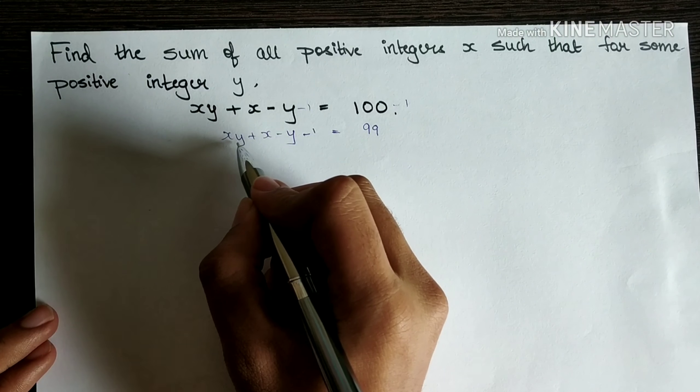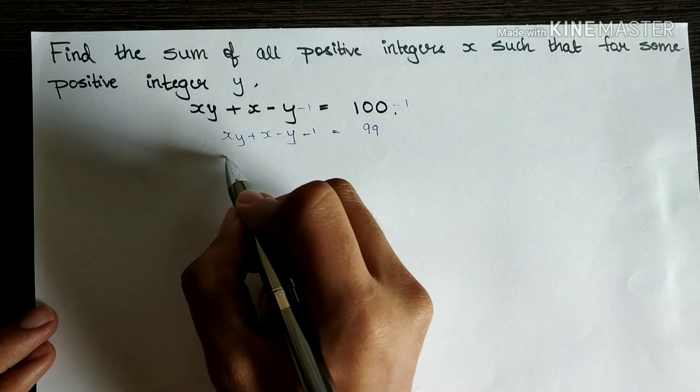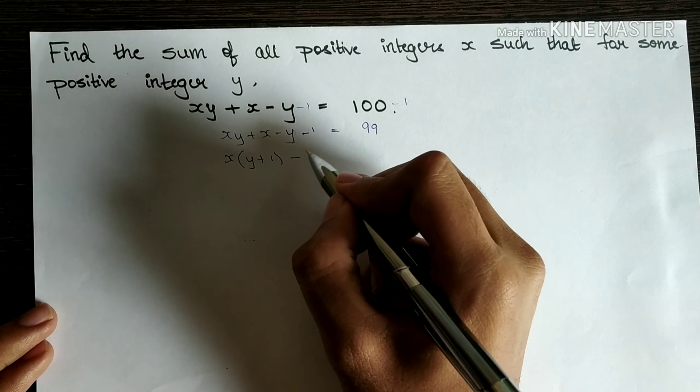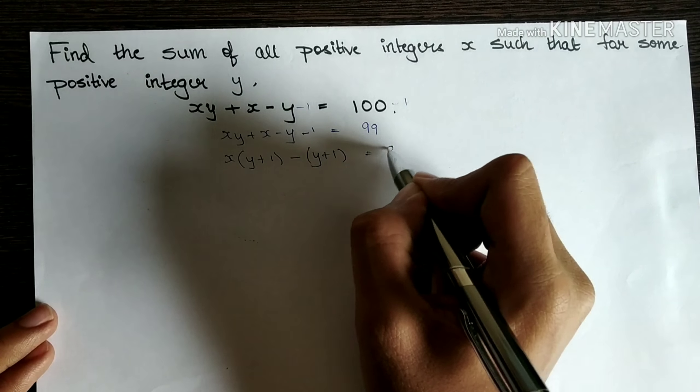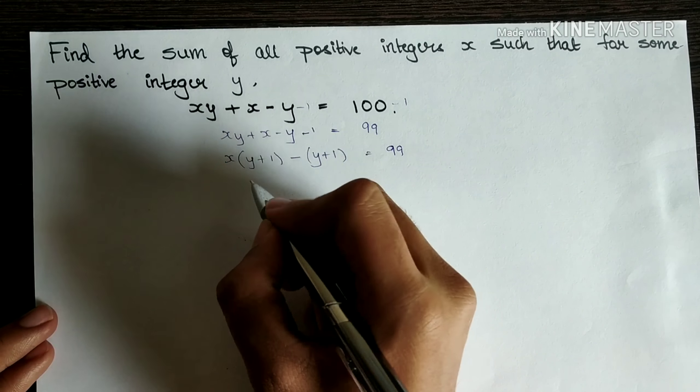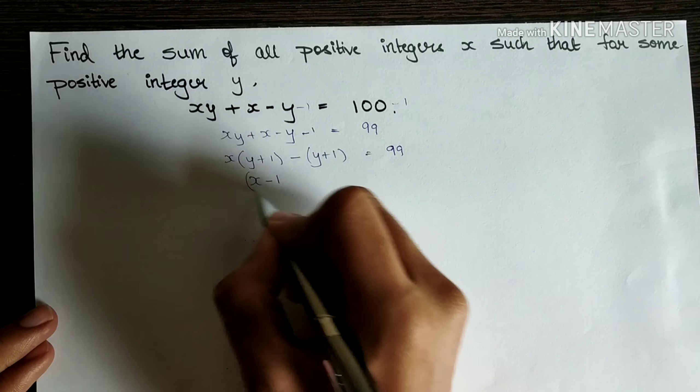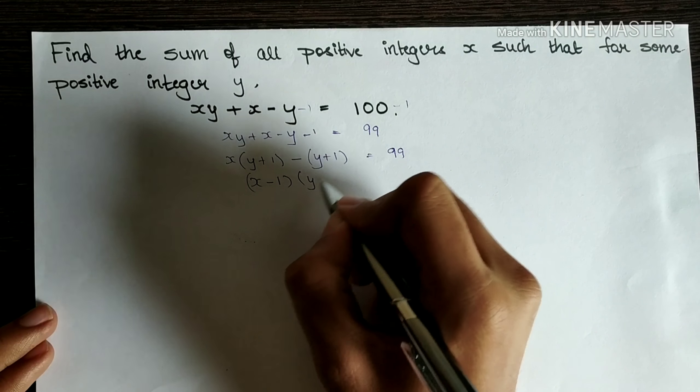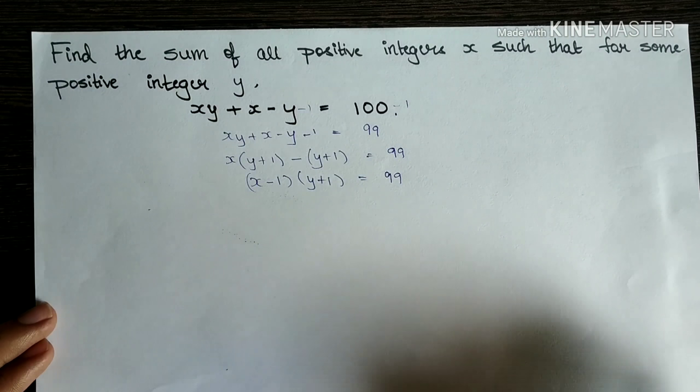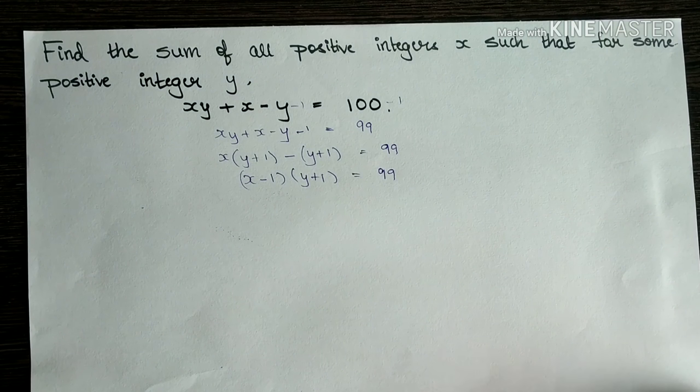Now we can take x common. You can see, right. x into y plus 1 minus, we'll take minus common into y plus 1 equal to 99. Now let's again factorize. This can be equal to x minus 1 into y plus 1 equal to 99. I'm sure you all got to know how we came to this part.